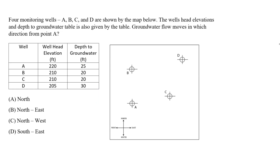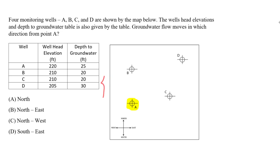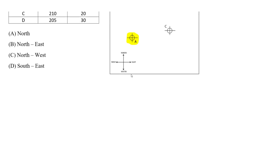So where is point A? Let's highlight that — it's going to be here. We want to determine in which direction we are flowing with respect to this orientation: north is up, south is down, west is left, and east is right. We want to know — are we going north, south, east, or west? We are given these choices.